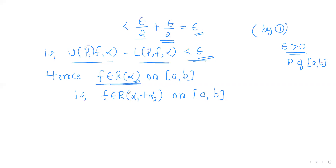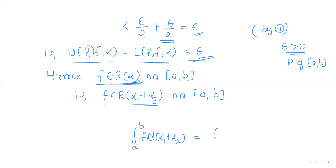Hence by the Riemann criterion for integrability, f must be Riemann-Stieltjes integrable with respect to the monotonically increasing function α. But α = α₁ + α₂, so f is Riemann-Stieltjes integrable with respect to α₁ + α₂. This proves one part of the theorem. It remains to prove the integral equality: ∫f d(α₁ + α₂) = ∫f dα₁ + ∫f dα₂.